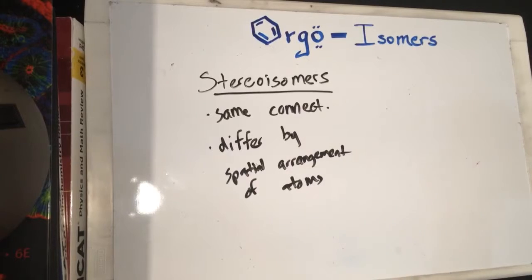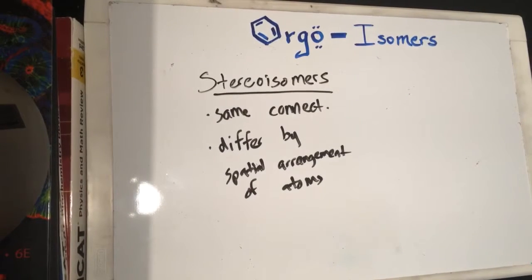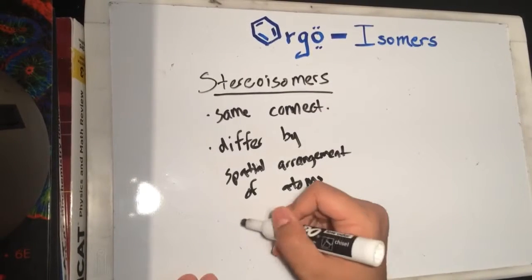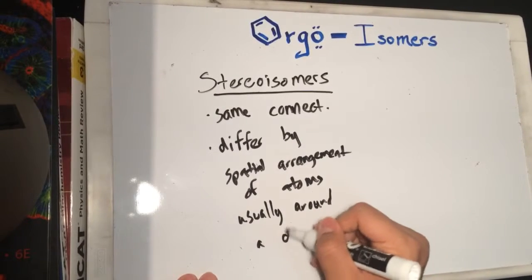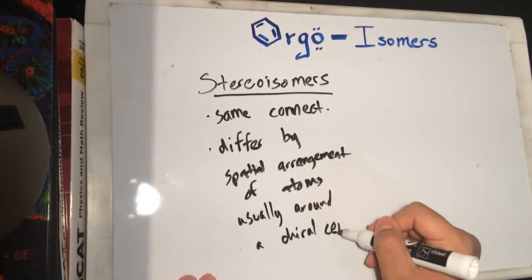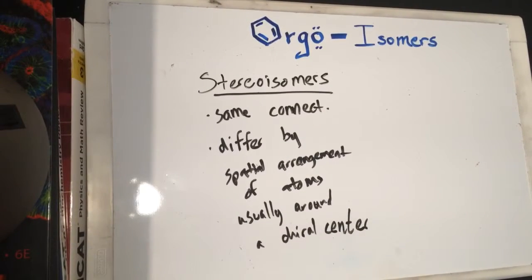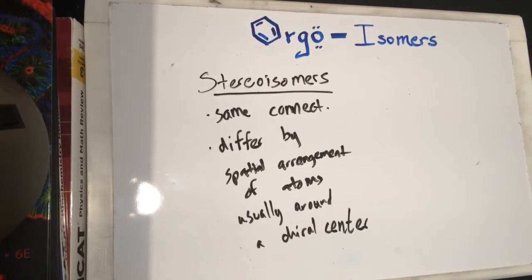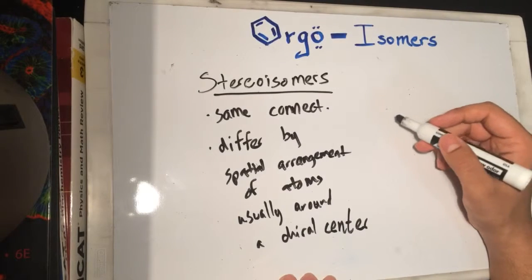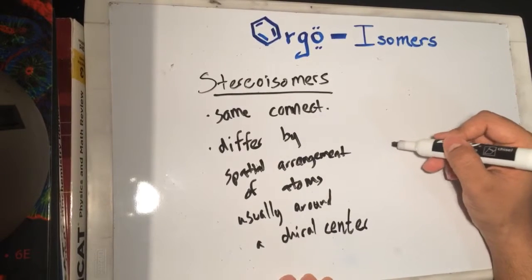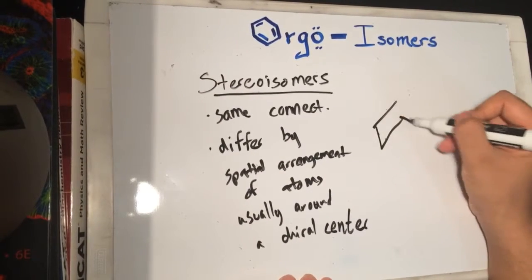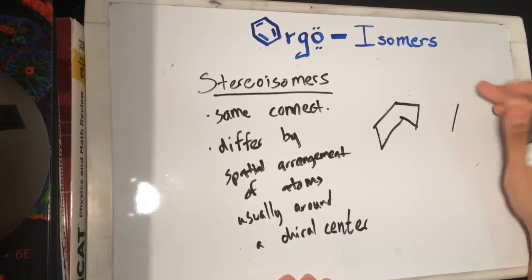They differ by spatial arrangement of atoms — usually around a chiral center. If you're not understanding what a chiral center is or what chirality is, please review that before watching this video. Let me give you some examples. Say we have two molecules like this.